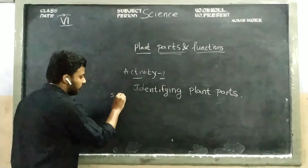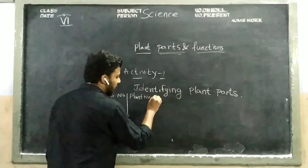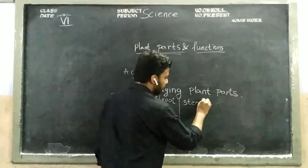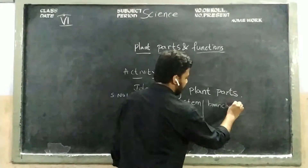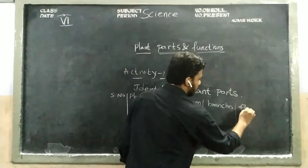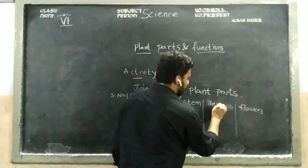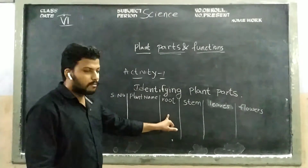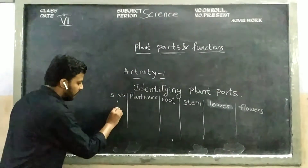Serial number one, and here is the plant name. The next sections contain: root, stem, branch, whether it contains flowers or not, and leaves. You know all plants contain leaves. These are the basic parts of each and every plant.